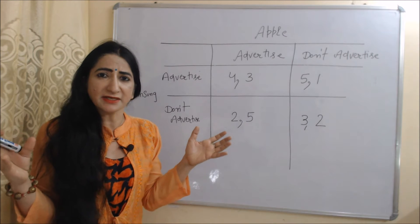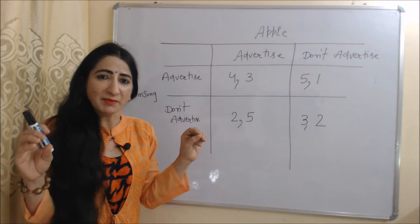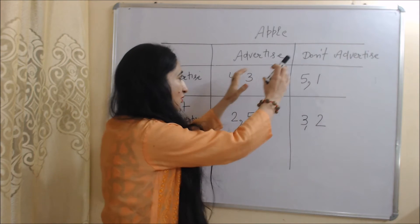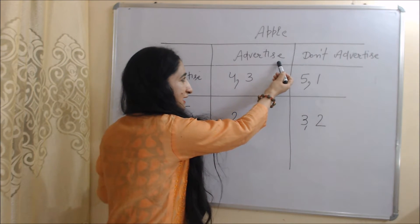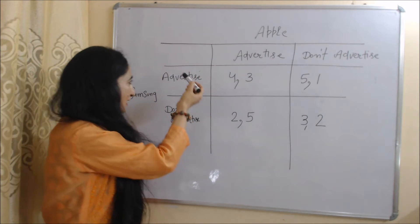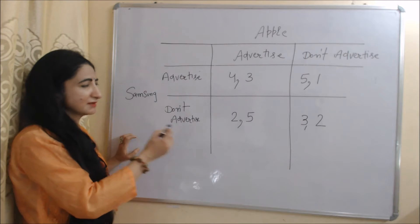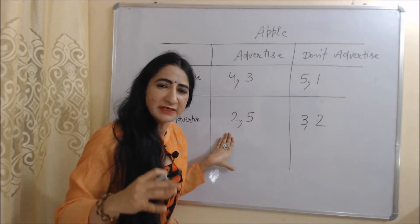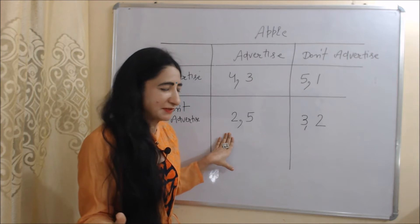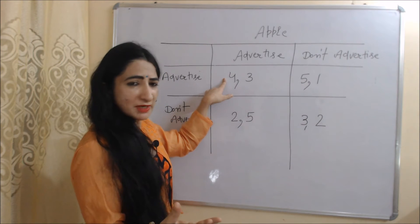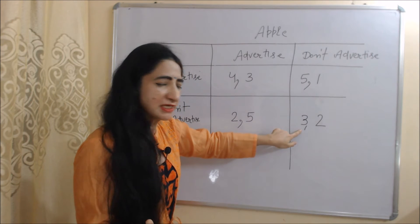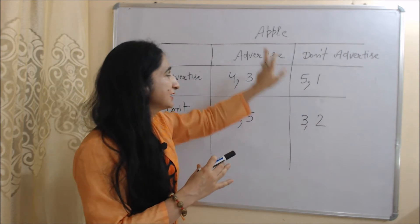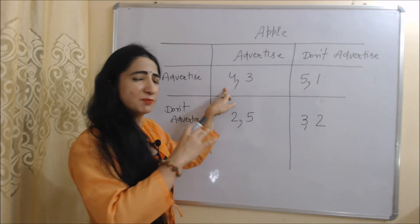With the help of this table we will clearly understand dominant strategy. Here we have two companies: Samsung and Apple, with two options — advertise or don't advertise. Row-wise, advertise or don't advertise indicates Apple; column-wise, advertise or don't advertise indicates Samsung. The numerical values in the table show the outcome of giving or not giving advertisement. In every case, the first numerical value indicates Samsung and the second indicates Apple.